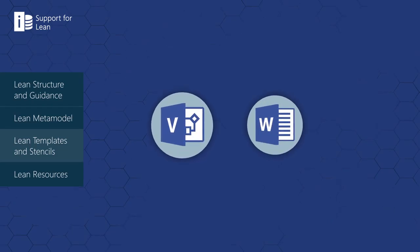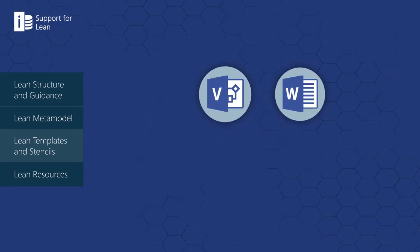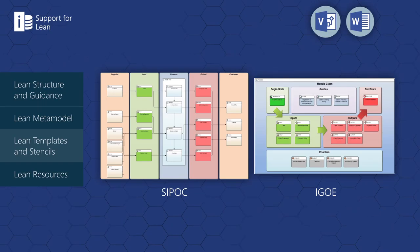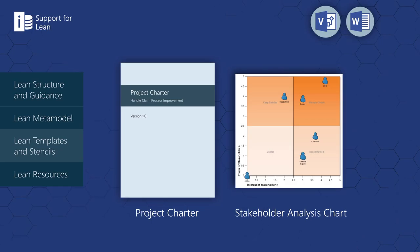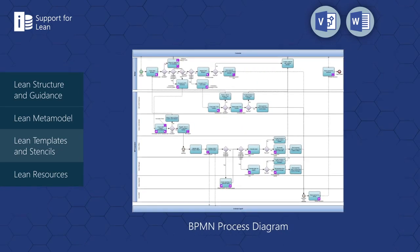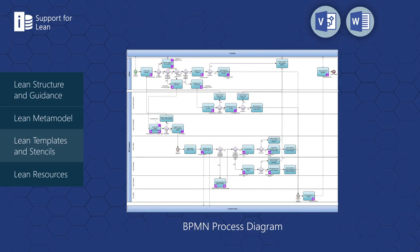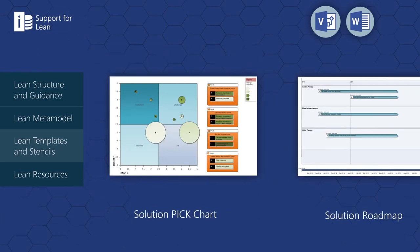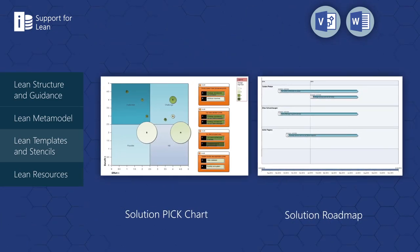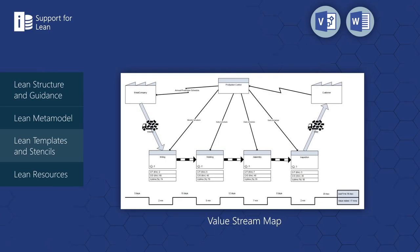Attractive Visio and Word templates and stencils are provided for each lean technique, allowing users to scope processes with the SIPOC or iGO diagram, generate a project charter with a project team map and stakeholder analysis chart, visualize waste and potential causes on a BPMN process diagram, perform a root cause analysis using the Ishikawa diagram or root cause analysis diagram, identify and prioritize solutions using the PIC chart, monitor and implement projects with a solution roadmap, and use a value stream map to analyze and design the flow of material and information required to bring a product or service to a consumer.